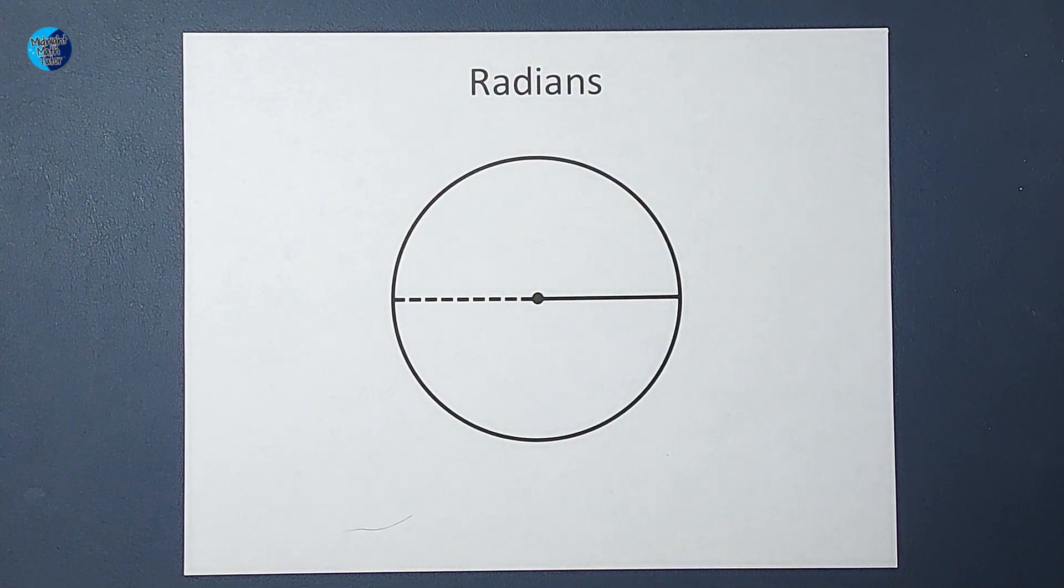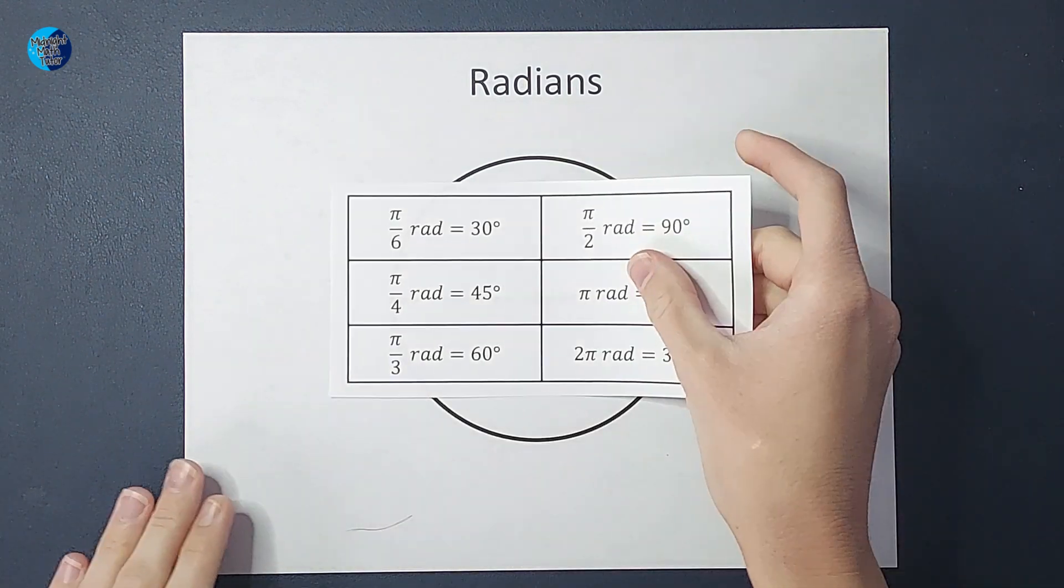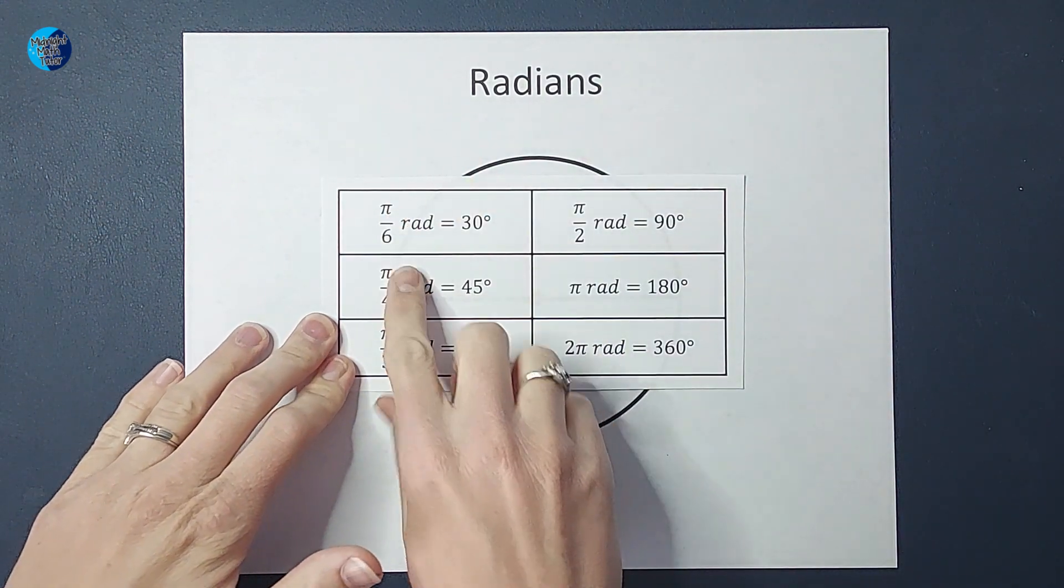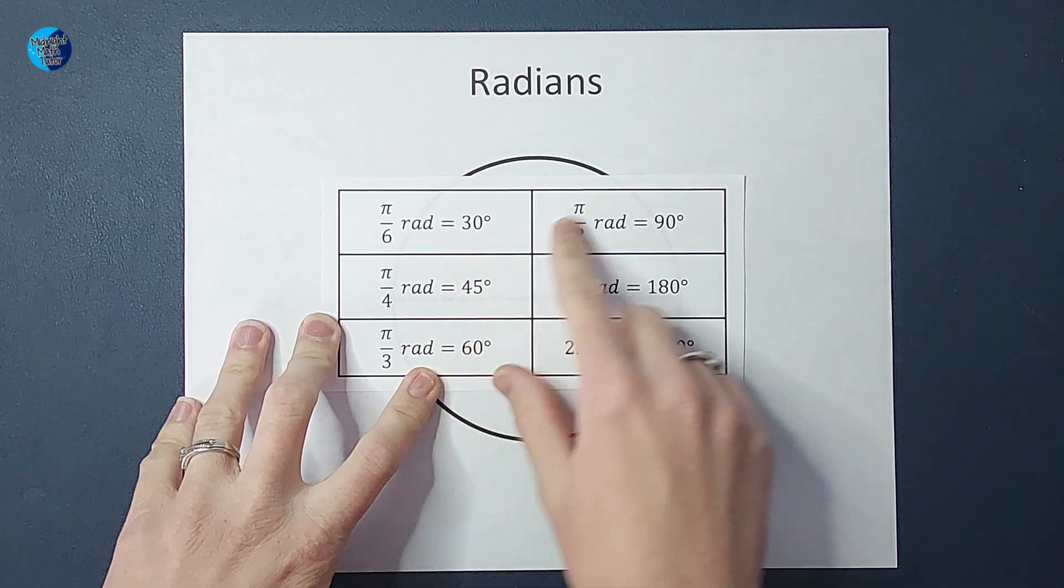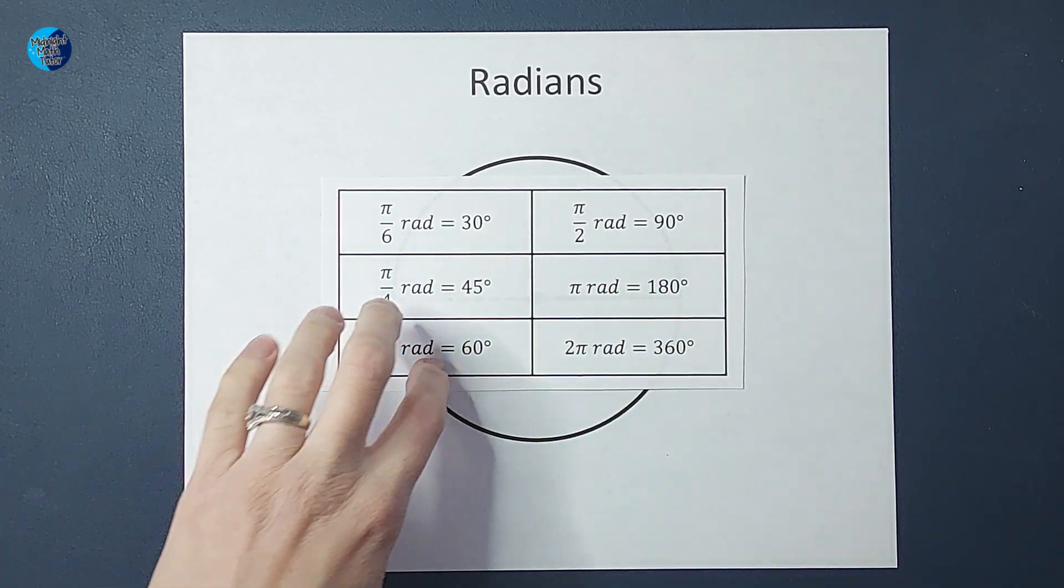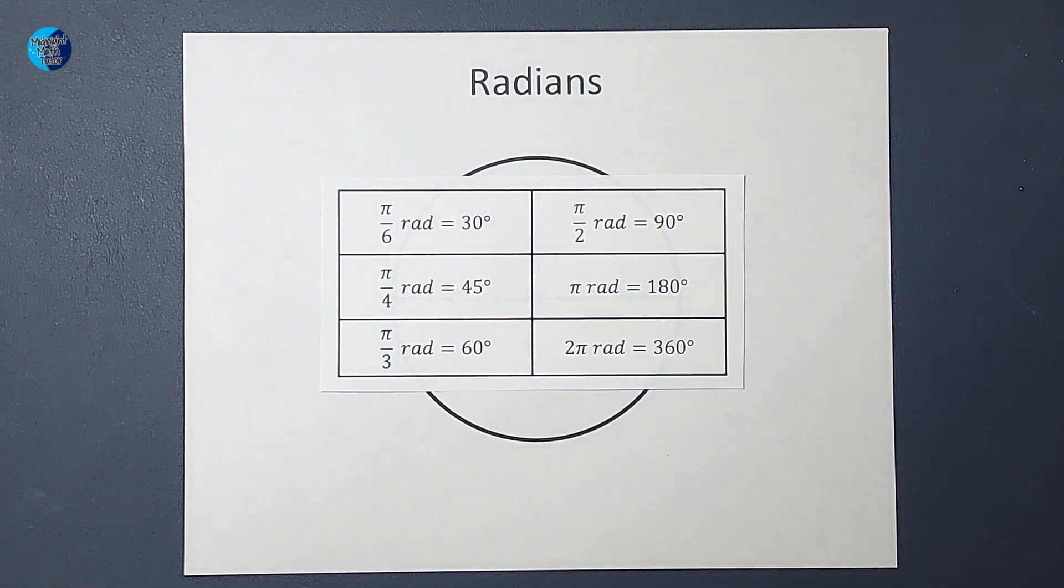So, you've probably been figuring out and been told that π/6 radians is 30 degrees, π/2 radians is 90 degrees, and so on. But where did these come from?